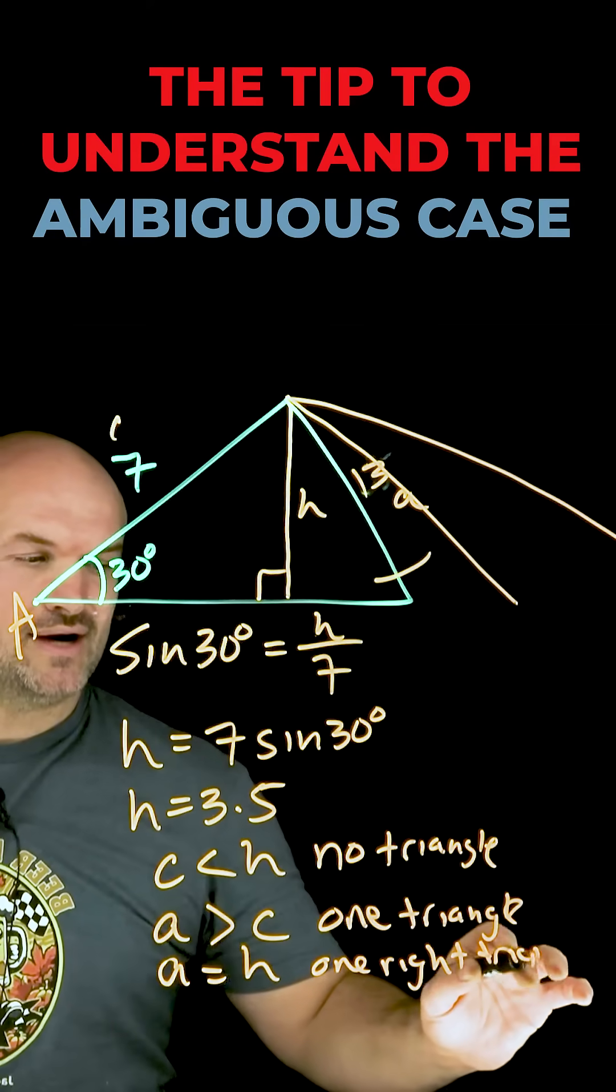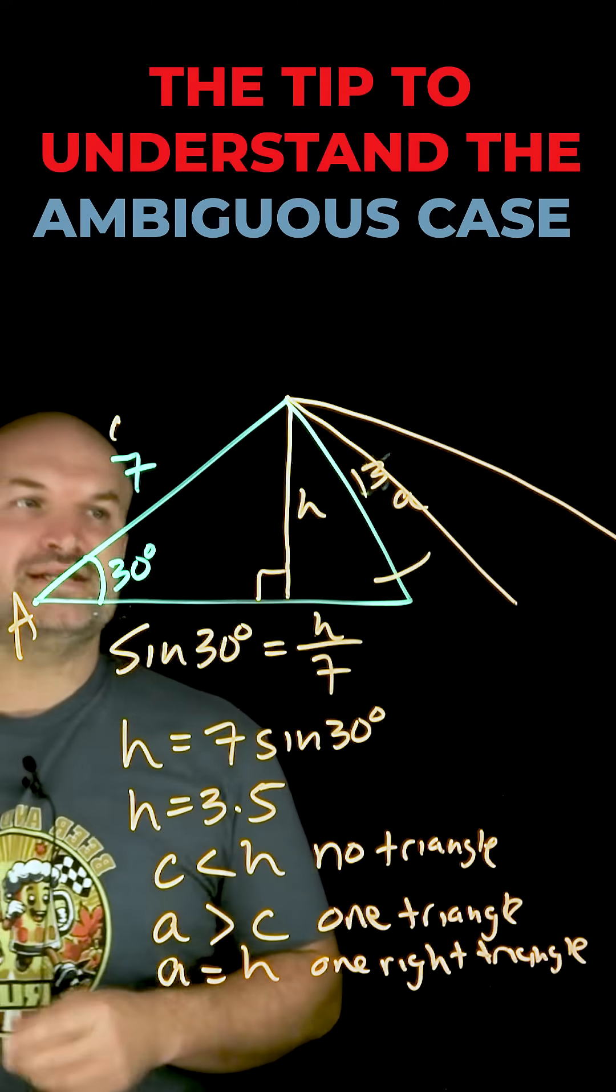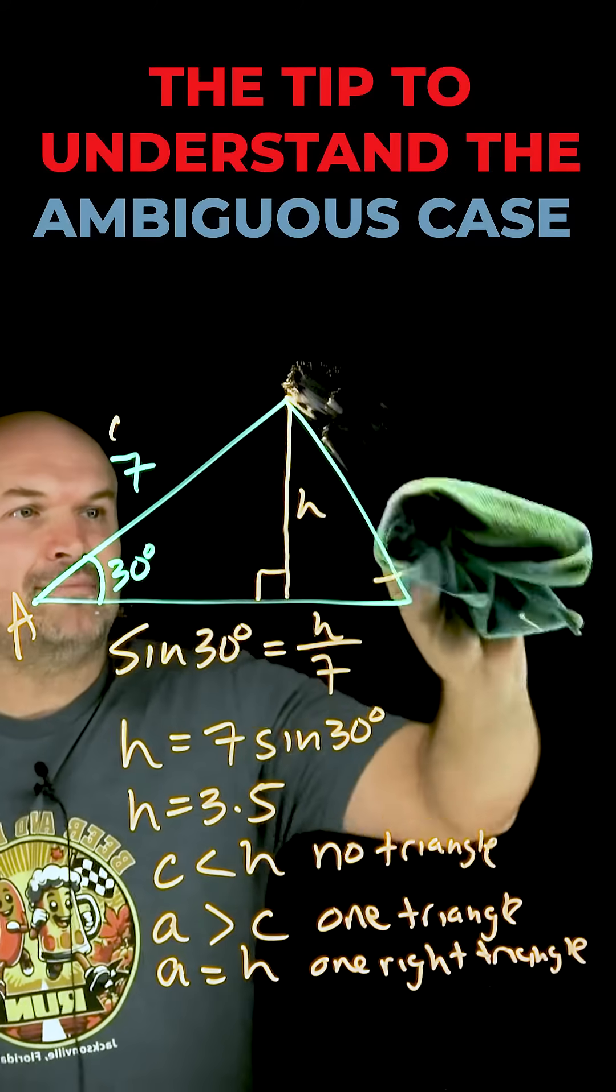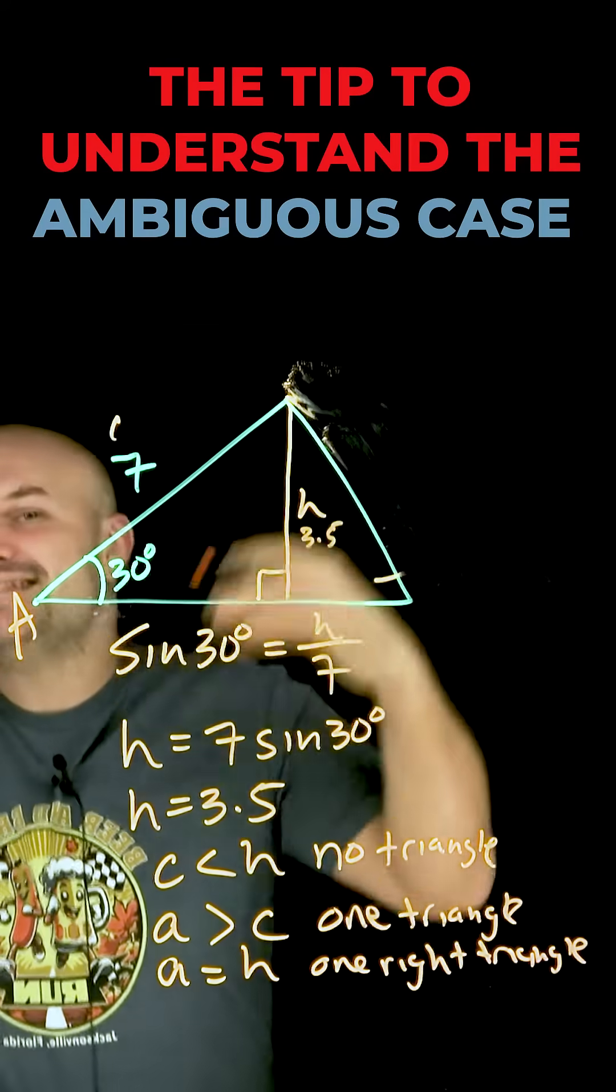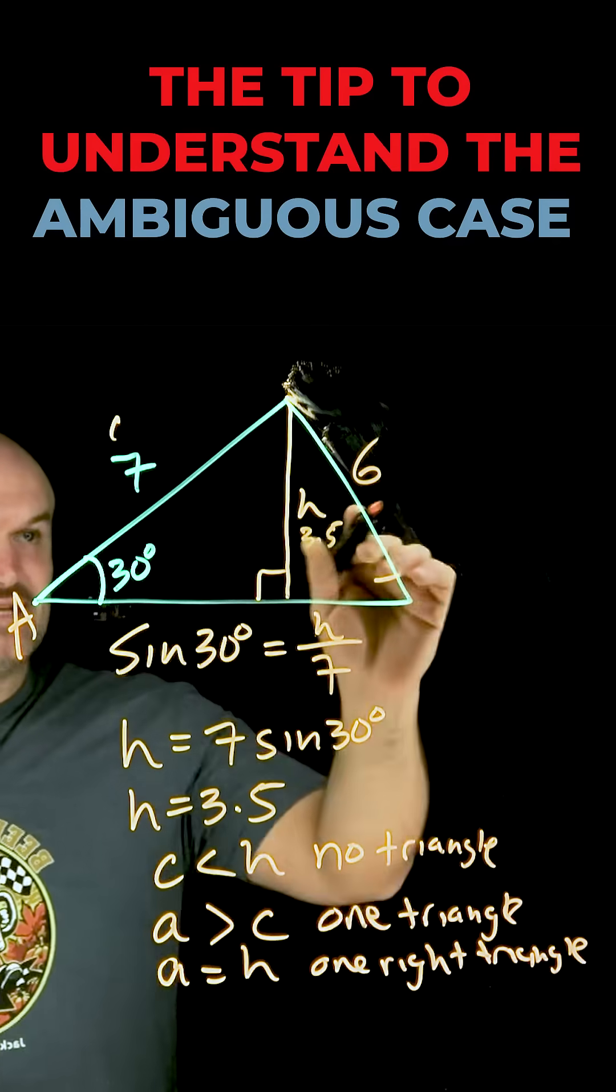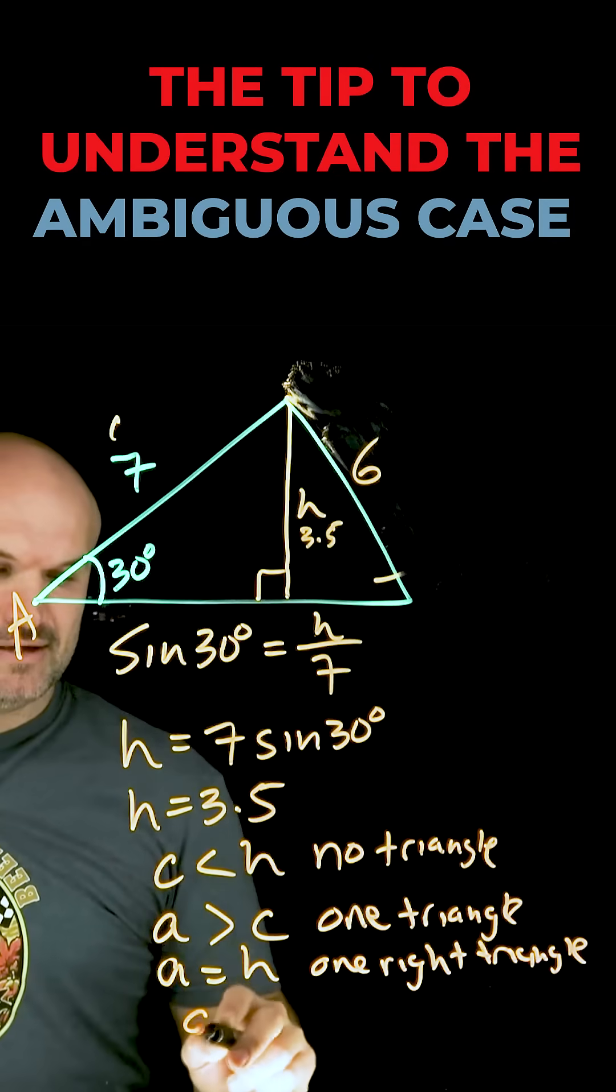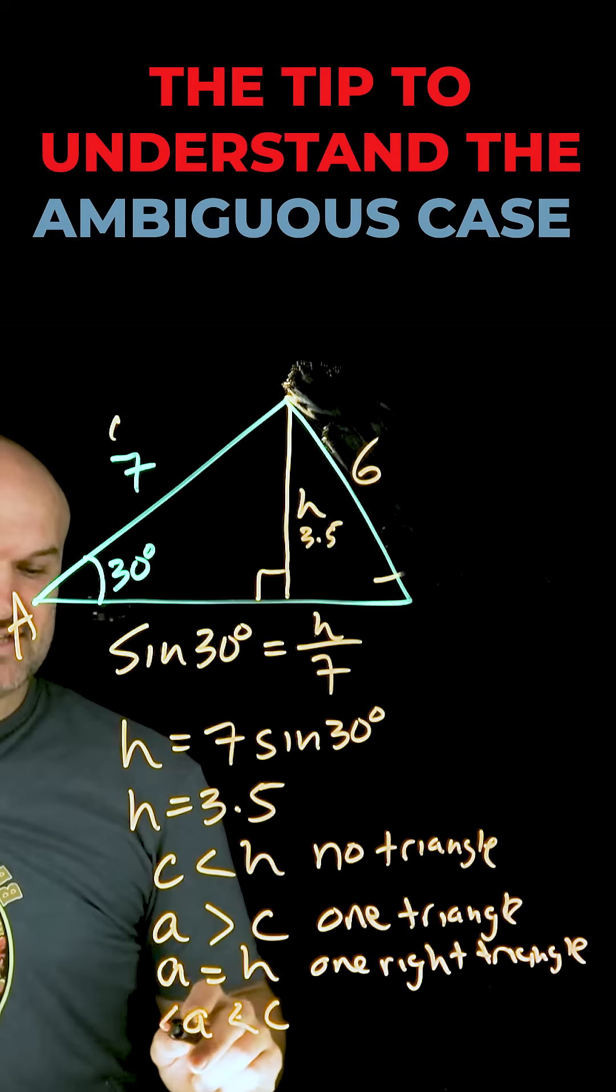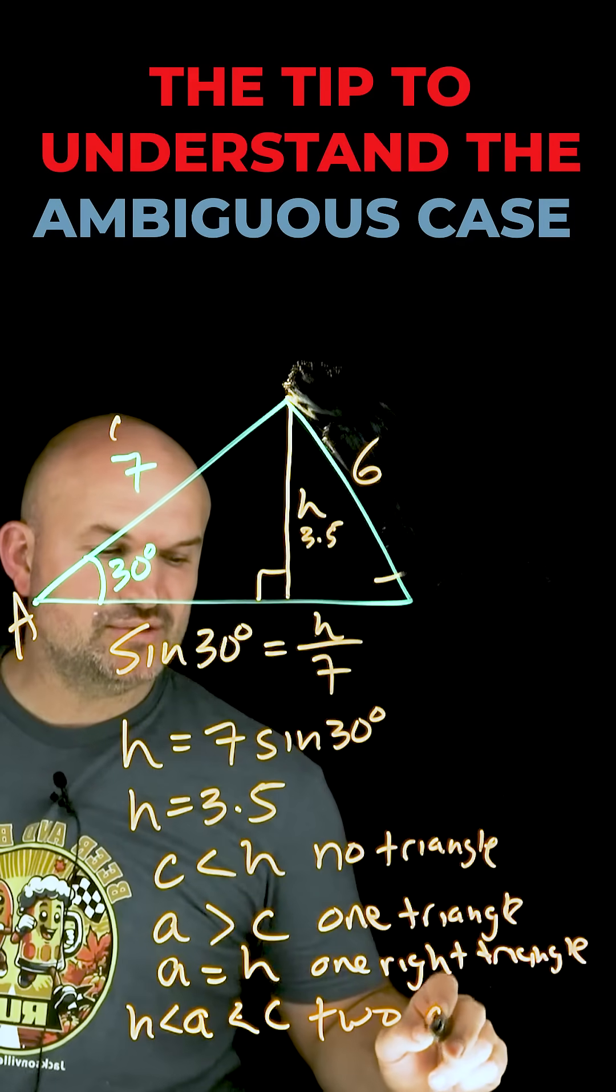Now, what about where the ambiguous case comes in for two solutions? This is the one that always confuses students. So what we know is that my last value here, so we know H is going to be 3.5. It has to be bigger than the height for the triangle to exist. We got that. But now we're at 6. And, however, 6 is less than 7. So whenever my A is going to be less than my adjacent side, but it's going to be larger than my height, I am going to have two solutions, or two cases.